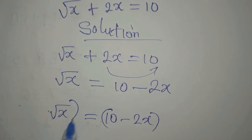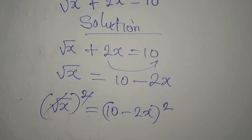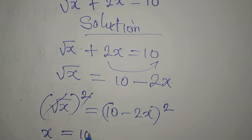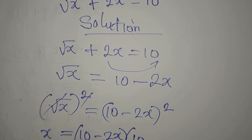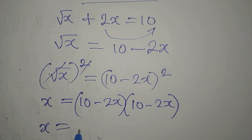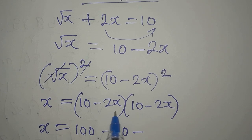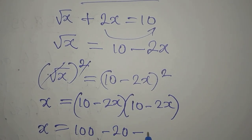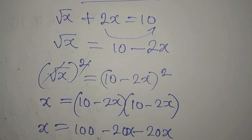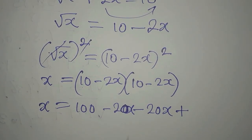The next target is to remove the square root, so we're going to square both sides. We write (10 minus 2x) squared on the right. Expanding: 10 times 10 is 100, 10 times minus 2x is minus 20x, and again minus 20x, but negative 2x times negative 2x turns positive.